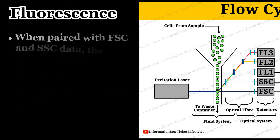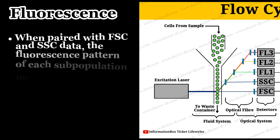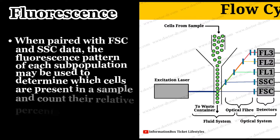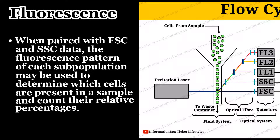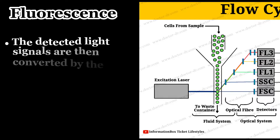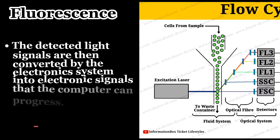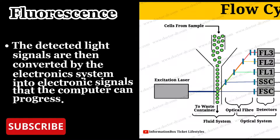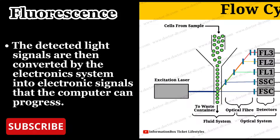When paired with forward scattered light and side scattered light data, the fluorescence pattern of each subpopulation may be used to determine which cells are present in a sample and collect their relative percentages. The detected light signals are then converted by the electronic system into electronic signals that the computer can process.